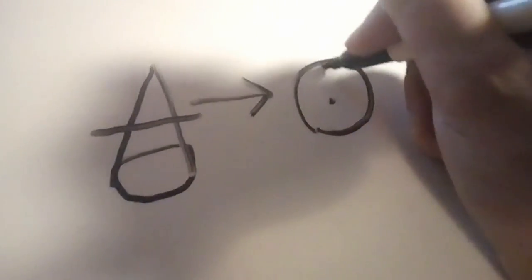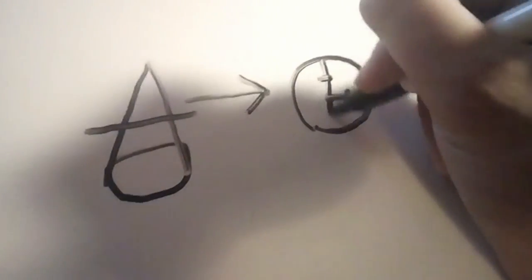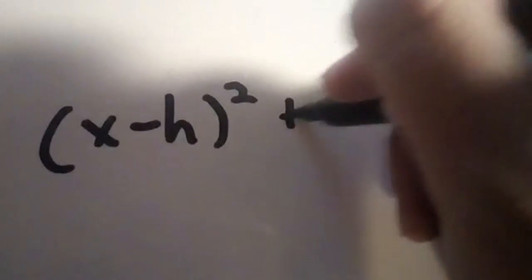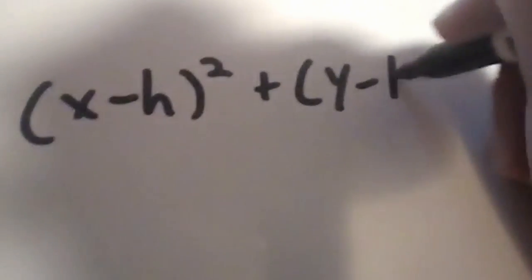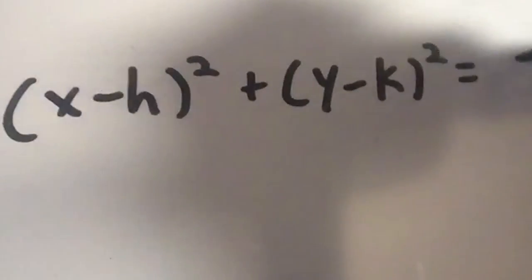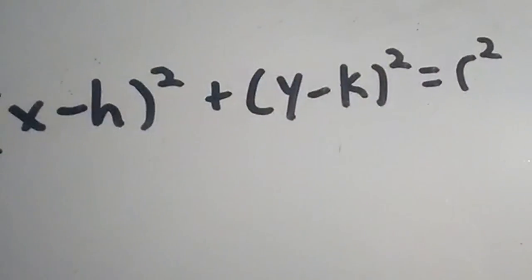Circles are round figures that have points an equal distance away from its center. The equation goes as follows: x minus h squared plus y minus k squared equals r squared. h and k are very similar to x and y in the way that they act like a normal ordered pair.